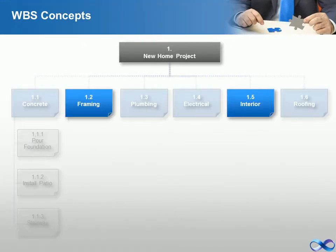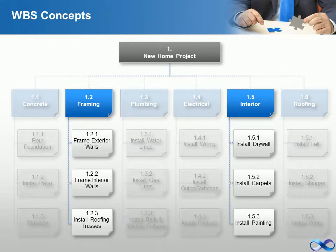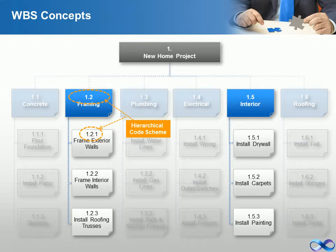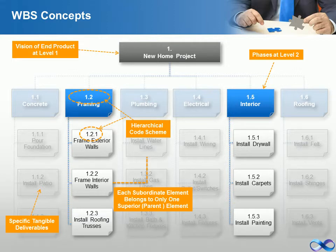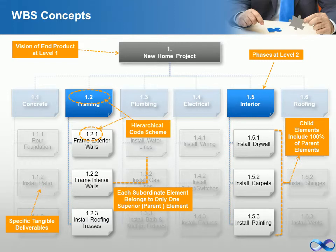Let's go through some basic concepts in the construction example we developed together. Please note the hierarchical code scheme, where the work breakdown structure codes have been assigned to the tasks and their relationship to the previous level. End product or services at level 1. Phases are at level 2. Specific tangible deliverables are at level 3. Each element must belong to one and only one parent. Child elements must include 100% of parent elements — this is known as the 100% rule, which will be discussed in depth in subsequent sections. Reaching the activities indicates a sufficient level of decomposition.